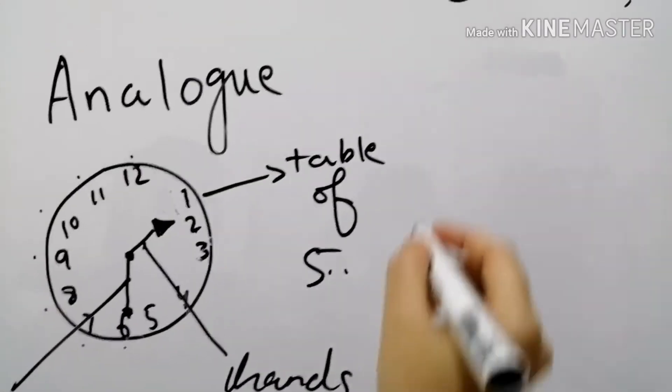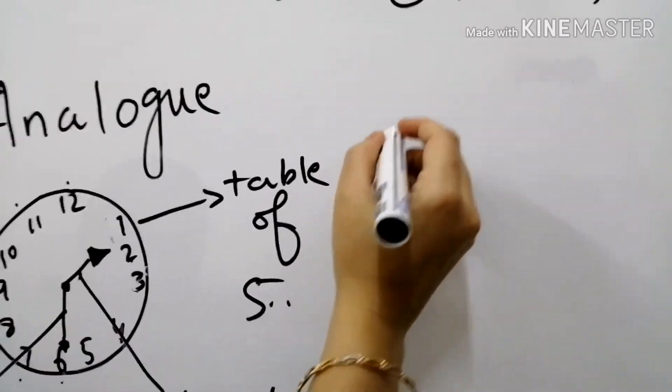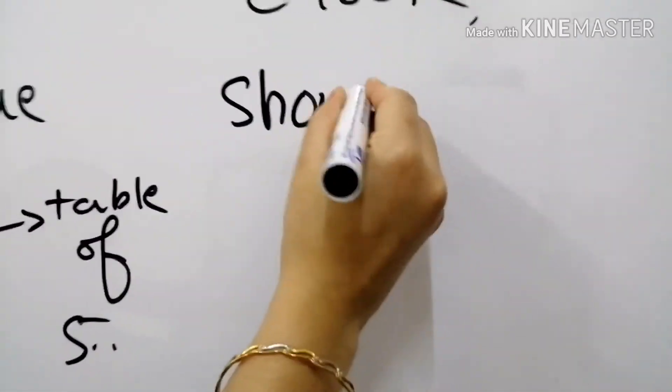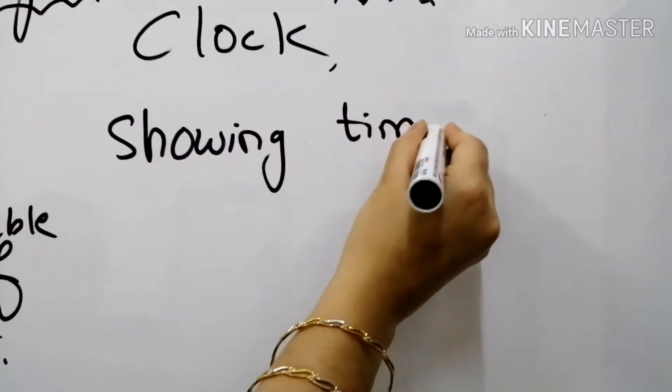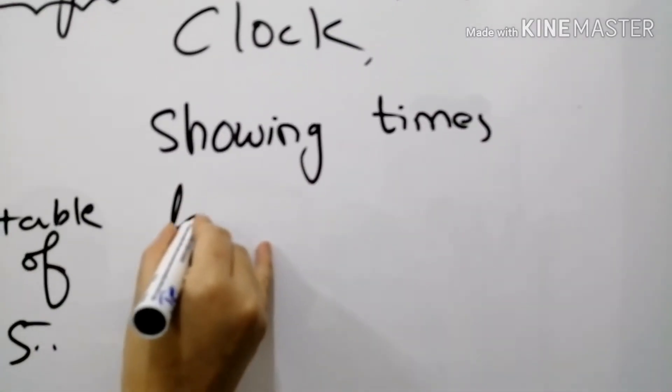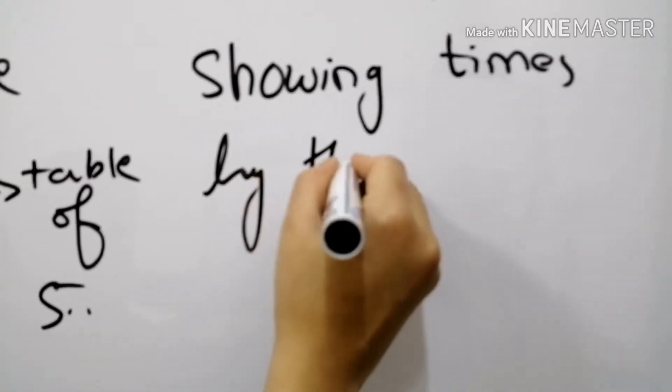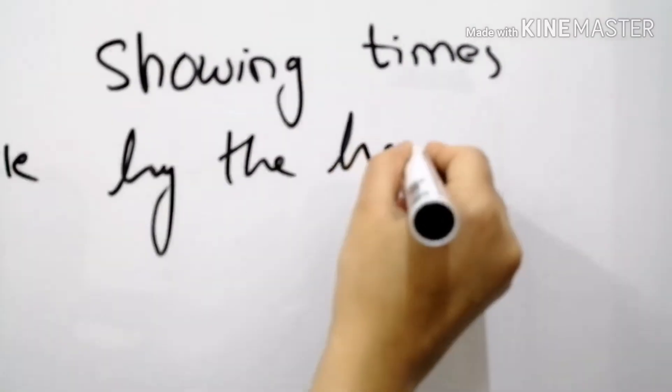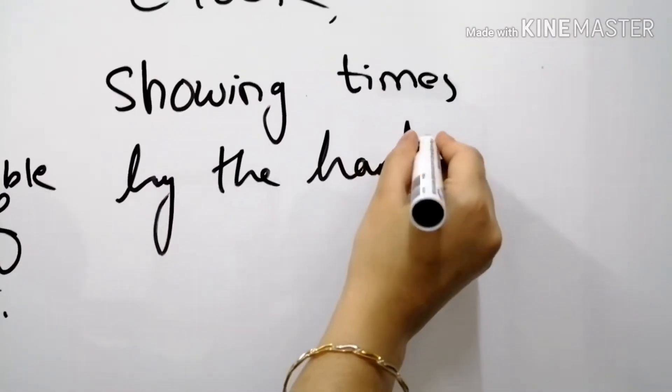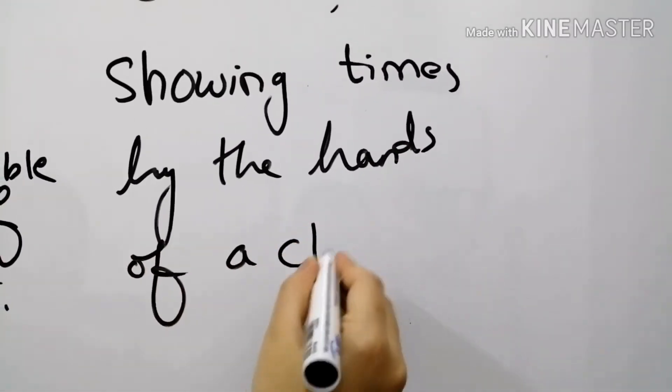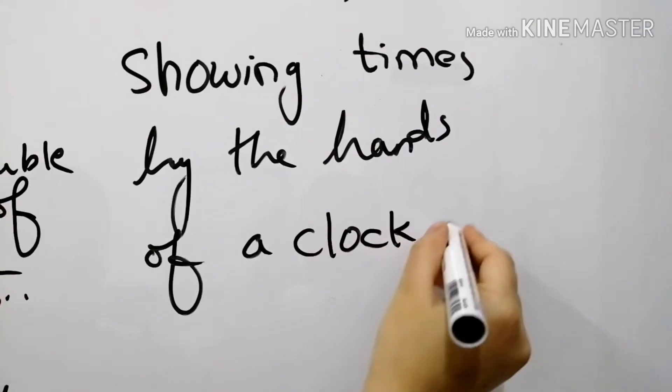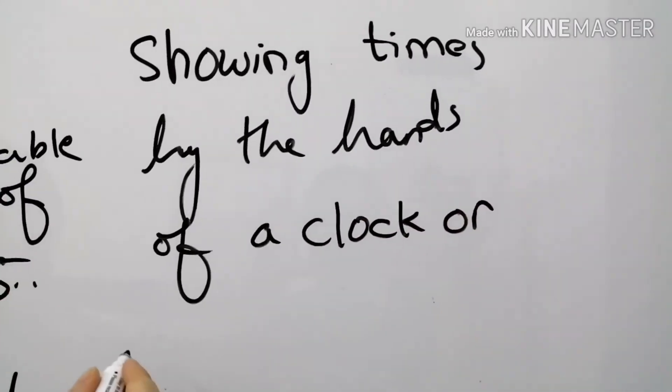I will write the definition. Showing time by the hands. Showing time by the hands of a clock or a watch.